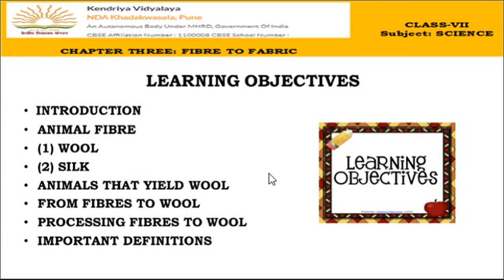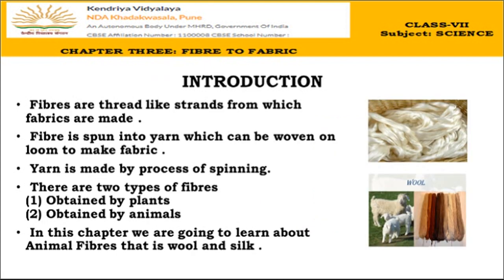Welcome to the video session of Class 7th Science Chapter 3: Fiber to Fabric. Today's learning objectives include: fibers, plant and animal fibers, two types of animal fibers — wool and silk — the animals that yield wool, the processing steps to make wool from fibers, and some important definitions.